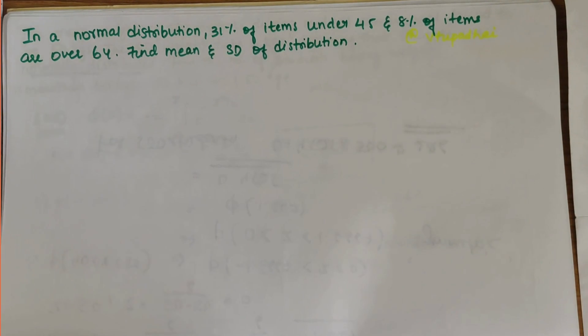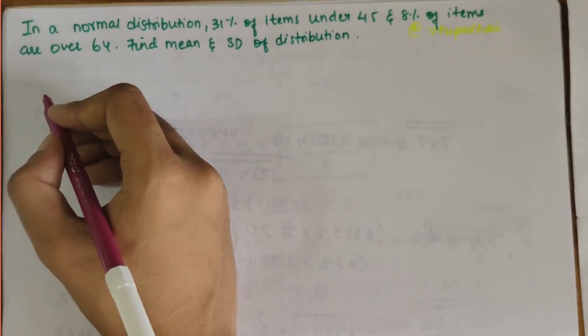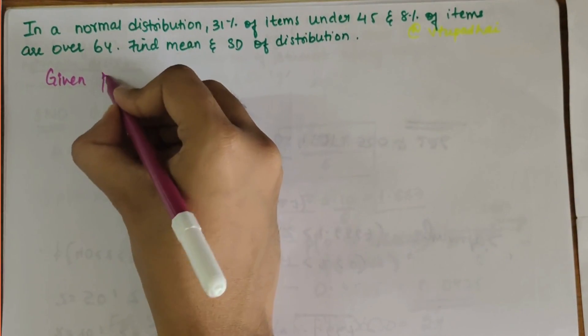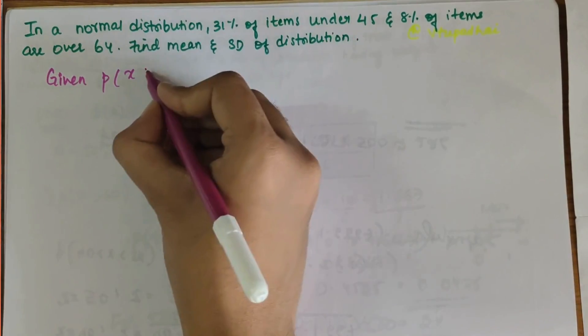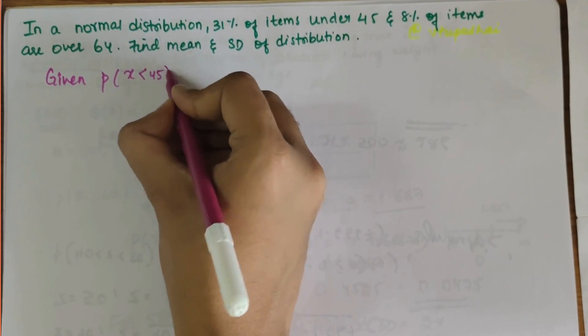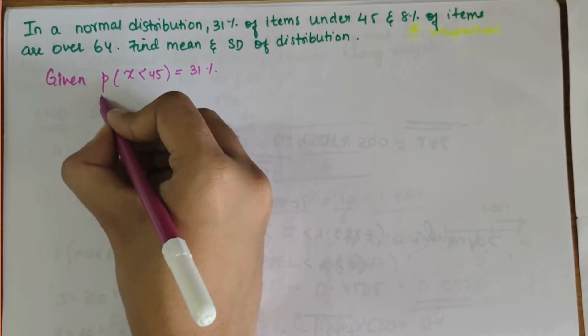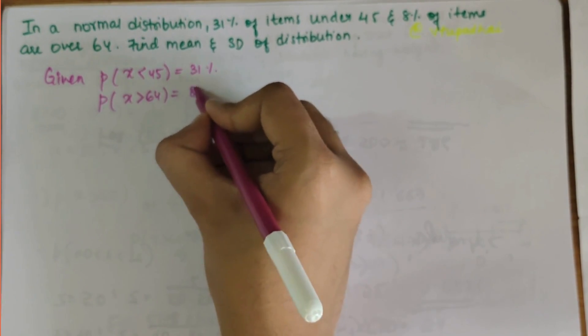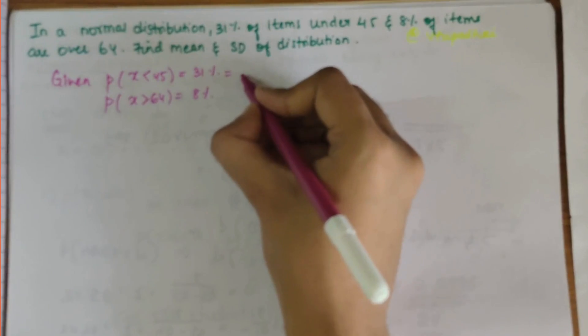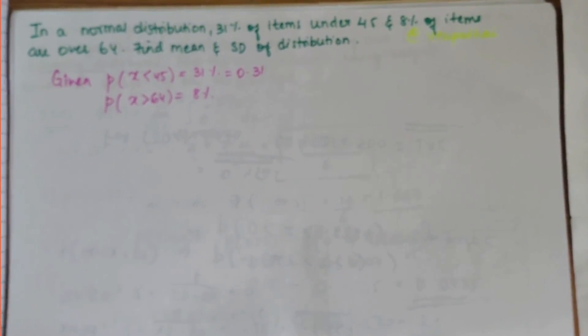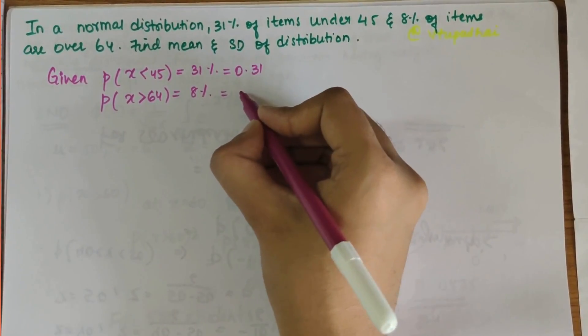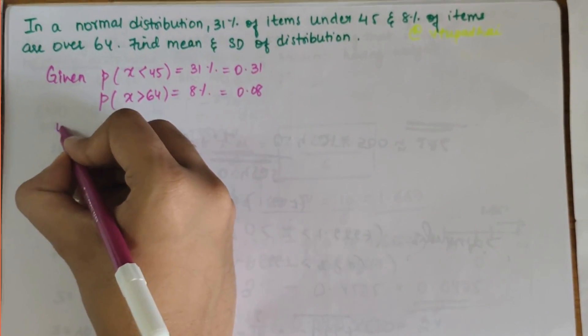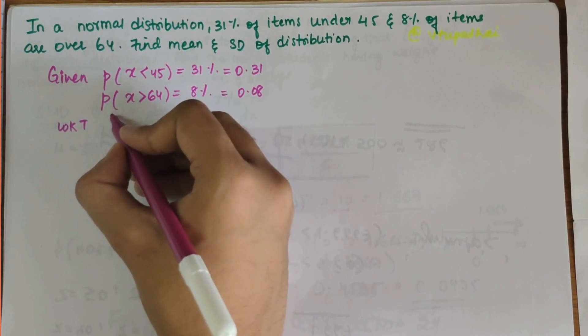First let's write the given values: P(X < 45) = 31% and P(X > 64) = 8%. 31% can be written as 0.31 and 8% can be written as 0.08.